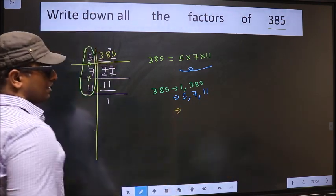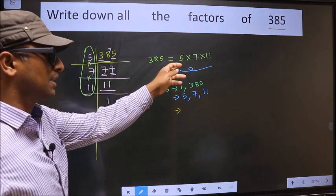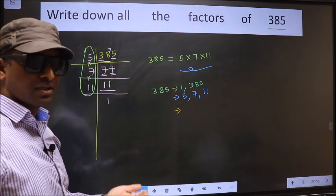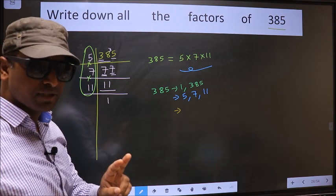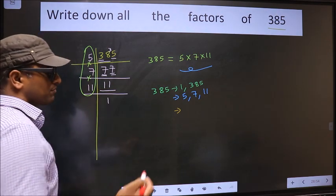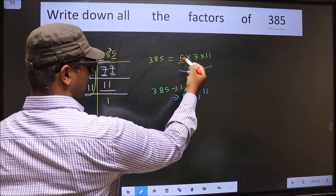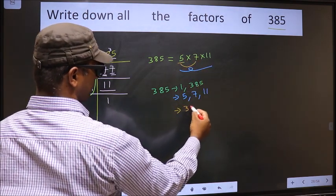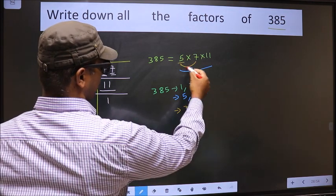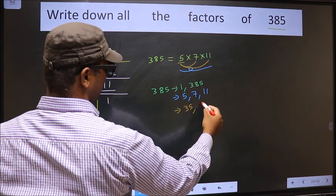Next, from these numbers you take a combination of two numbers. How do we do that? First I fix 5, combine with 7. 5 into 7 is 35. Now I combine with 11. 5 into 11 is 55.